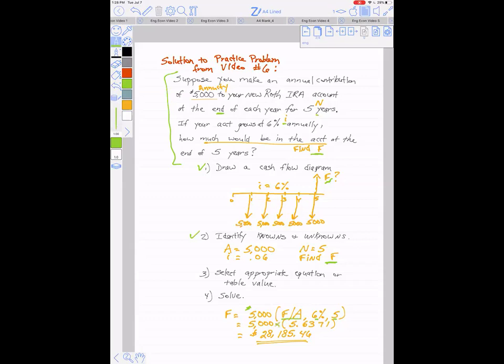Solve for F: $5,000 annuity times a factor in the 6% interest table for five years on the five-year row in the find F given A column. Multiply it by the amount of one annuity payment, $5,000. So the factor is 5.6371, and so the answer is $28,185.46 is the future value of this stream of $5,000 deposits growing at 6% per year.